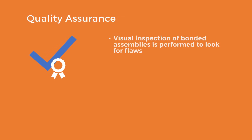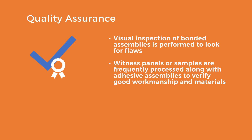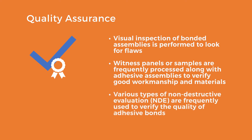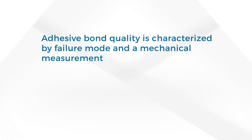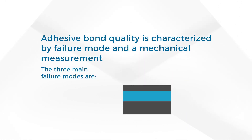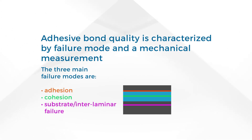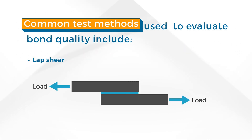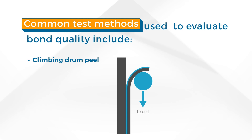Quality assurance: visual inspection of bonded assemblies is performed to look for flaws. Witness panels or samples are frequently processed along with adhesive assemblies to verify good workmanship and materials. Various types of non-destructive evaluation are frequently used to verify the quality of adhesive bonds. Bond quality is characterized by failure mode and mechanical measurement. The three main failure modes are adhesion, cohesion, and substrate interlaminar failure. Adhesion failure is unacceptable, as it means the adhesive did not adhere to the adherent. Cohesion failure of the adhesive or substrate failure are acceptable, as one can design to the mechanical properties such as fracture toughness of the adhesive and substrate respectively. Common test methods include lap shear, double cantilever beam, climbing drum peel, and wedge crack.